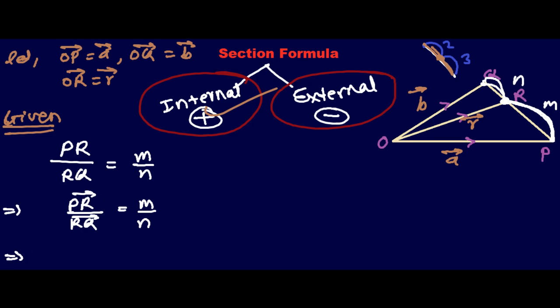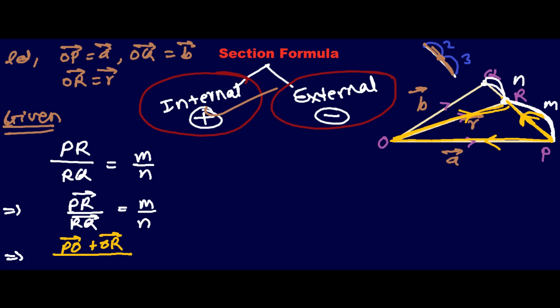Now, what is vector PR? We can find the value of PR by the triangle law of vector addition. The triangle law states that if two vectors are represented by two sides of a triangle in magnitude and direction, then the third side taken in opposite order represents the resultant. So vector PR is the resultant of PO plus OR, meaning PR equals PO plus OR.